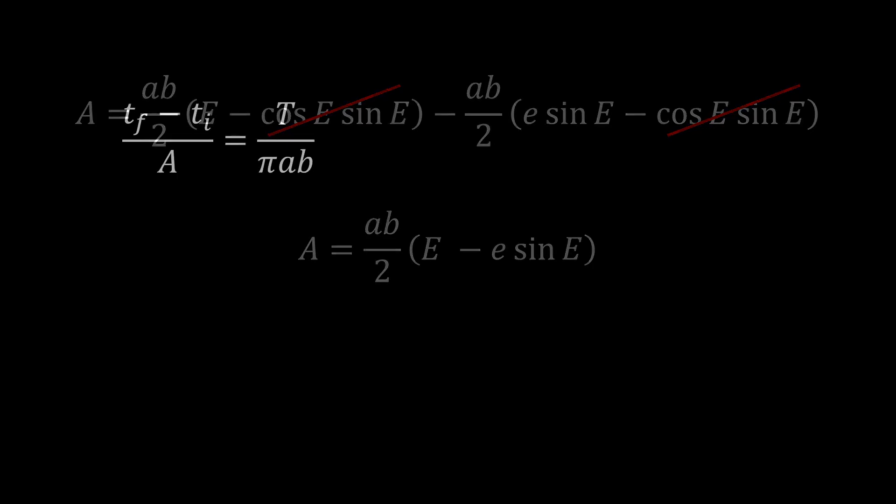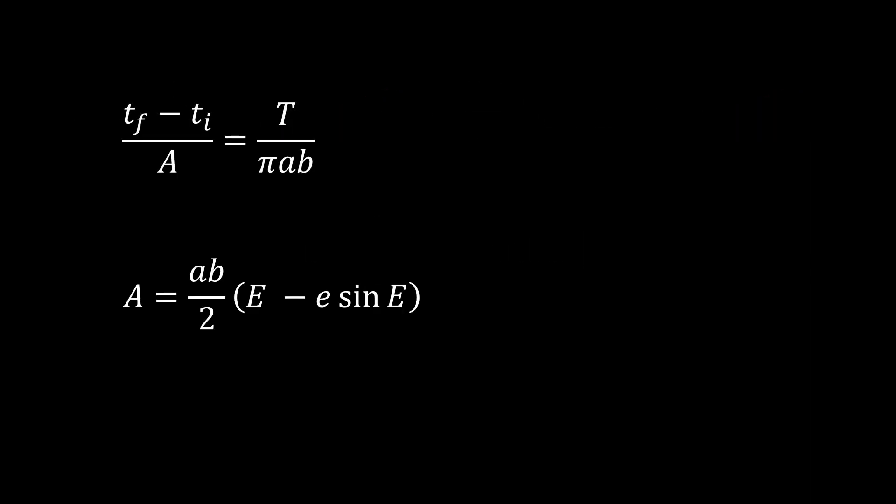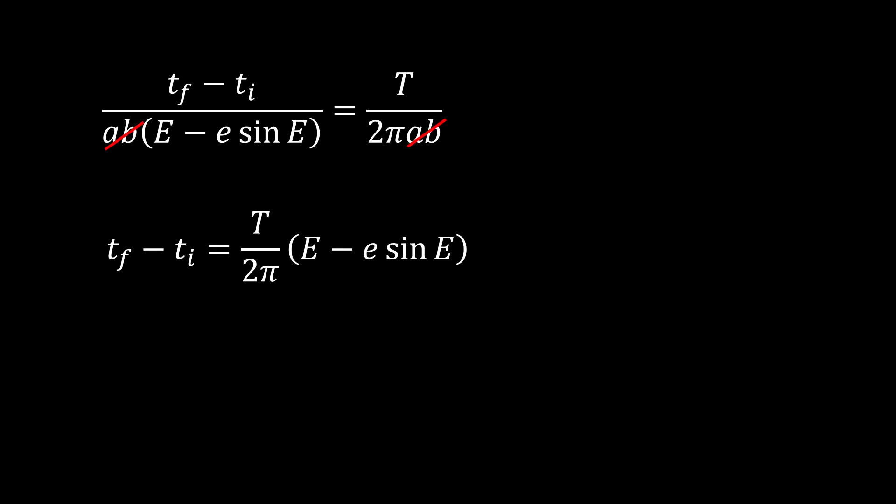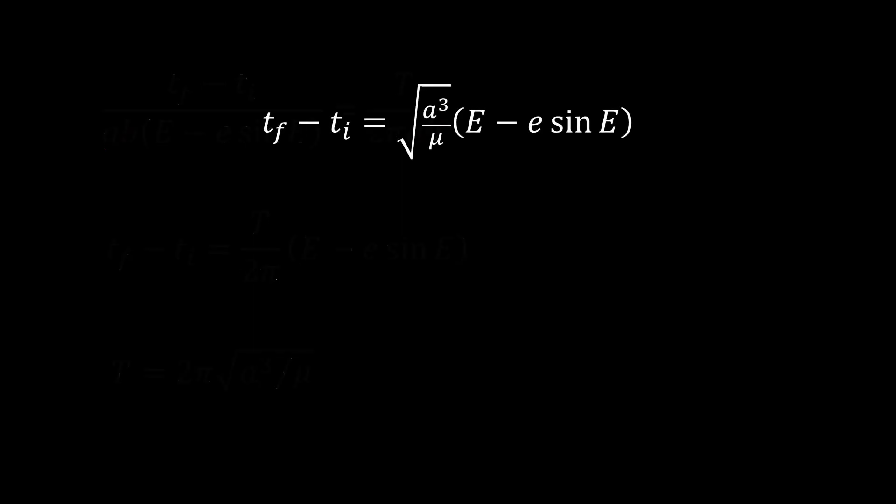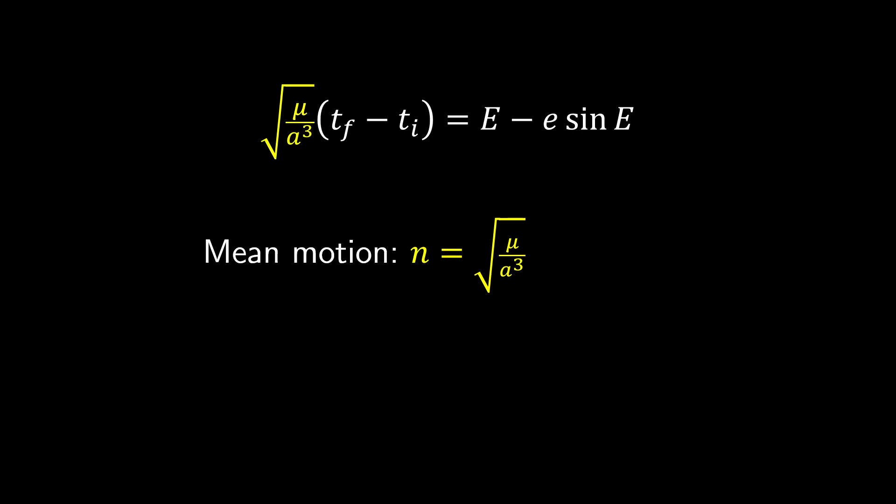With that, we can at last look back to our equation with t initial and t final, and plug in our expression for a. Doing a bit of rearranging, and recalling from Kepler's third law mentioned earlier, that period may be easily expressed as 2π times the square root of a cubed over μ, we can simplify this expression. After tidying up a bit more, Kepler called this remaining constant, root μ over a cubed, the mean motion and the entire left side of the equation the mean anomaly. At long last, we have Kepler's equation, stating that the mean anomaly equals the eccentric anomaly minus eccentricity times the sine of the eccentric anomaly.